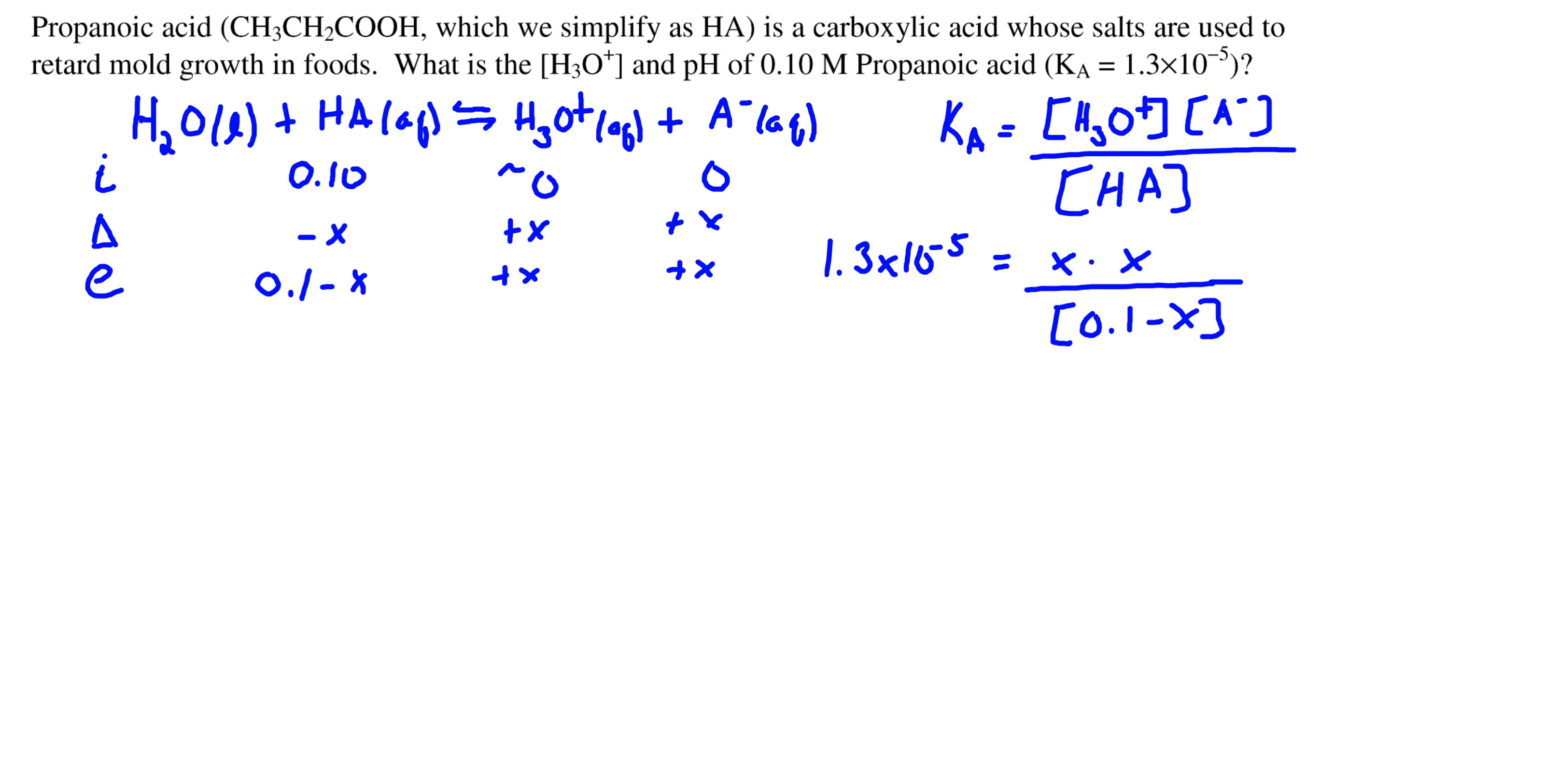We've plugged in our values from the ICE table into our equilibrium constant expression, and what we see is we have an equation we're simply going to solve for x. It'll make it easy for us if we can do the simplifying approximation that this x can be neglected, so let's test.